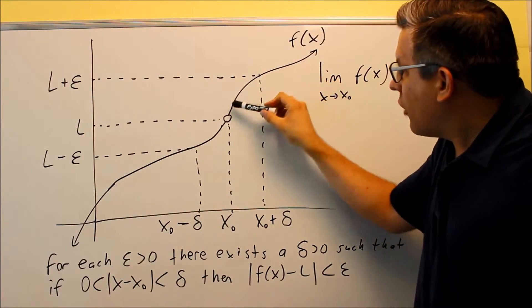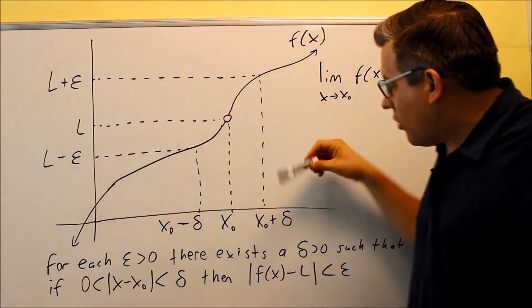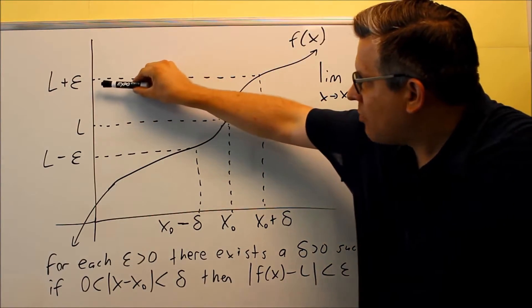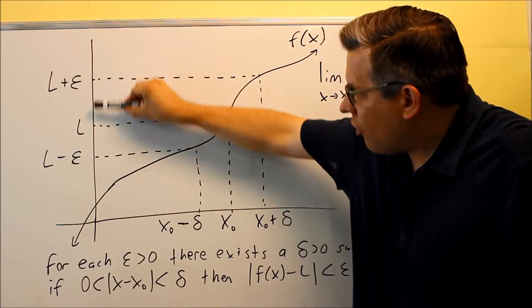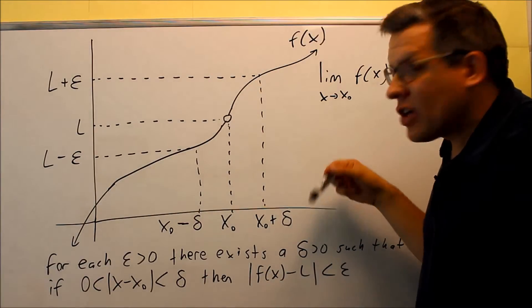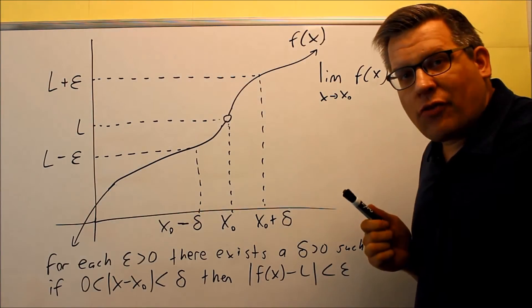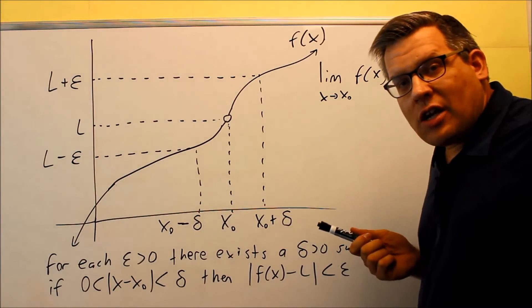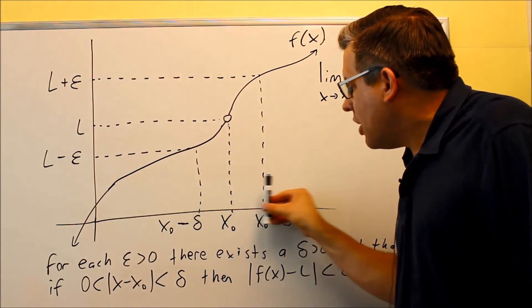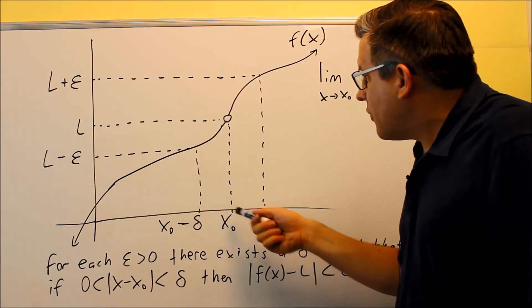f(x) is the actual y value wherever I am along the curve. If I take that minus L, I'm considering a positive difference because of the absolute value. So as long as I pick some f(x) value in the interval between L minus epsilon and L plus epsilon, when I take that difference it's got to be greater than zero but less than epsilon. That's basically what the definition says — it's describing the errors in each direction. Think of it as a tolerance level: if I have some tolerance in the y direction, I have a tolerance in the x direction as well.